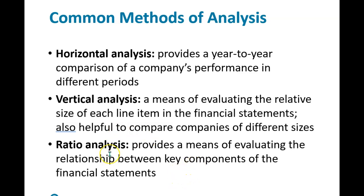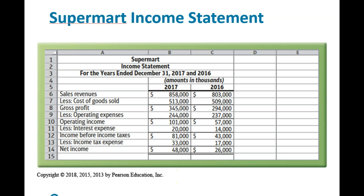Ratio analysis evaluates the relationship between key components of the financial statements. For example, if net income is $100,000, how much in assets did it take to earn that $100,000? It looks at relationships within statements and also between statements. The company we're going to use for this is Supermart, right out of the textbook, and it's a good example.